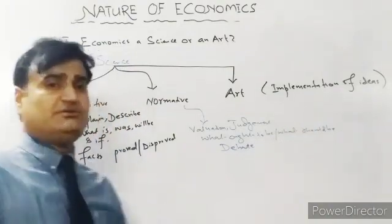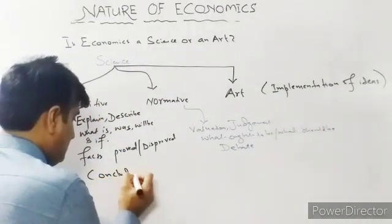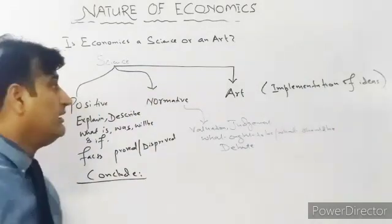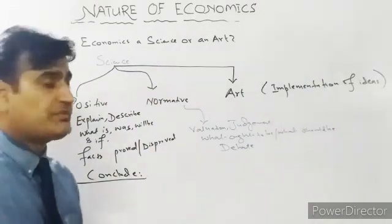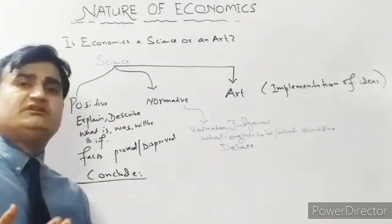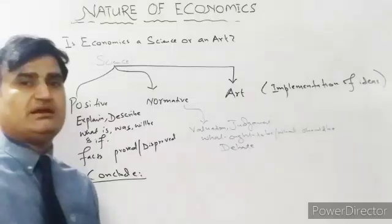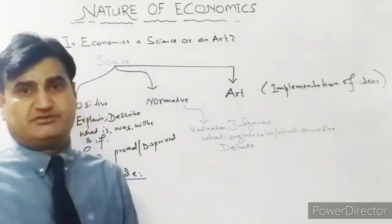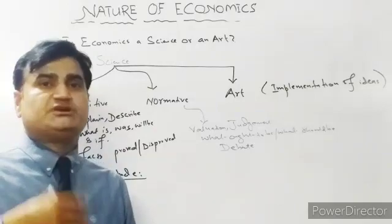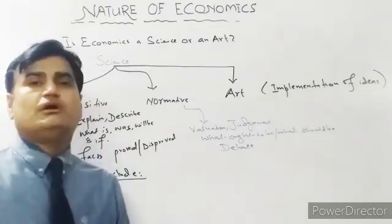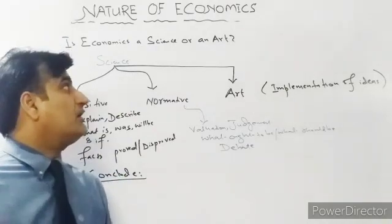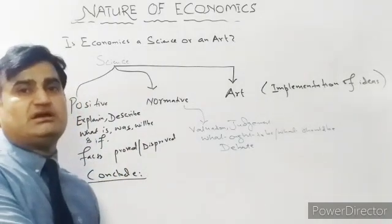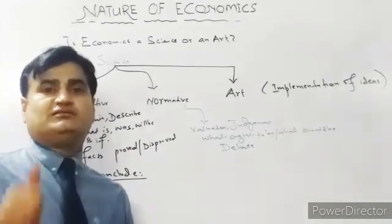We can conclude that economics is a science of definitions, and it is a science as well as an art. Positive science means the study of events from a theoretical point of view, creating a relationship between causes and effects. Normative economics requires one to give their own judgment in order to overcome problems for future benefits. This covers the nature of economics. In the previous video we discussed the definition of economics, and now we have covered this topic. Thank you very much for watching, and see you in the next video.